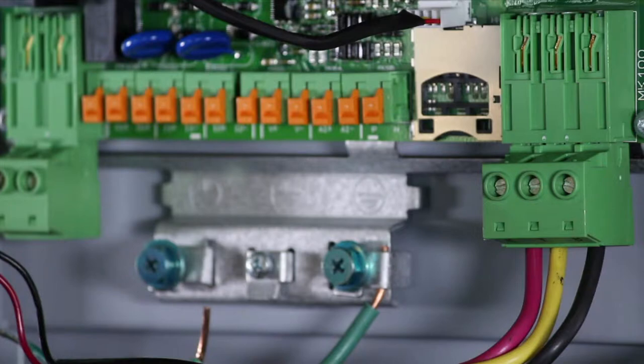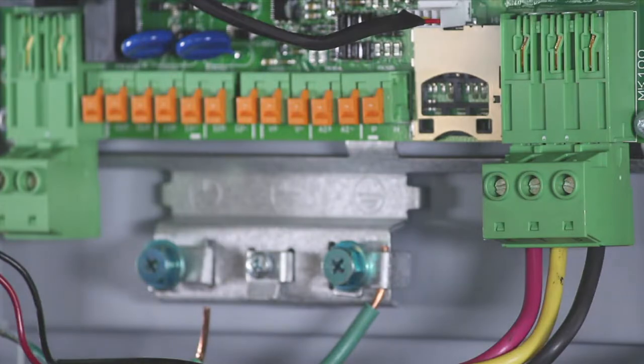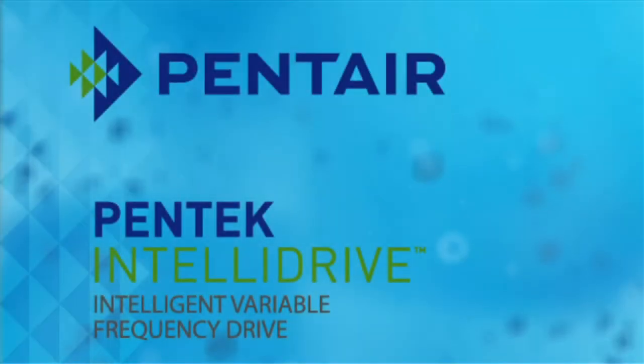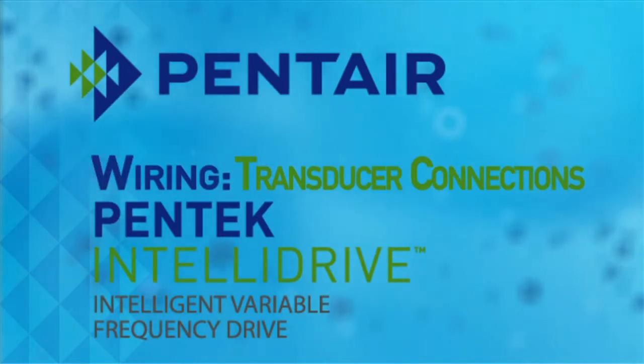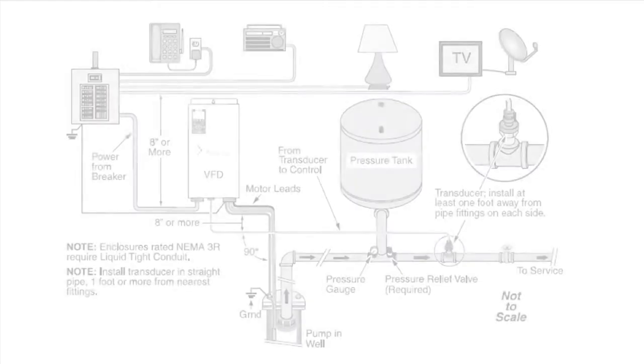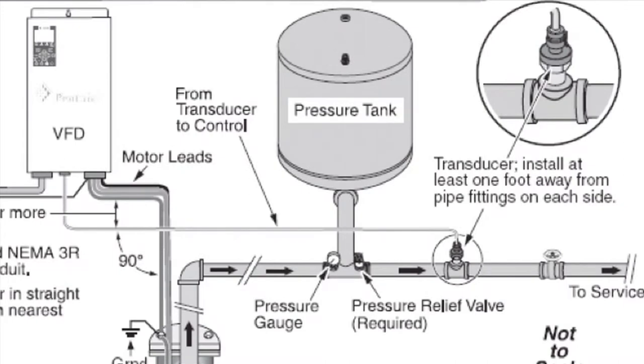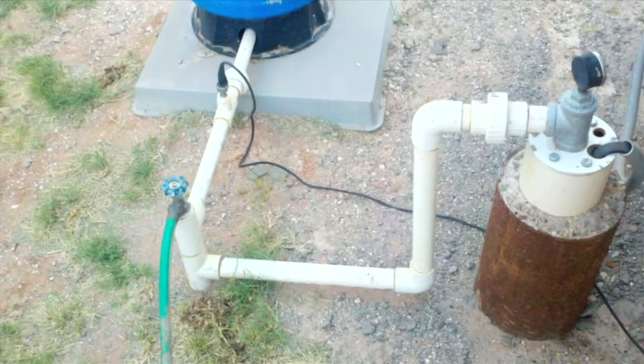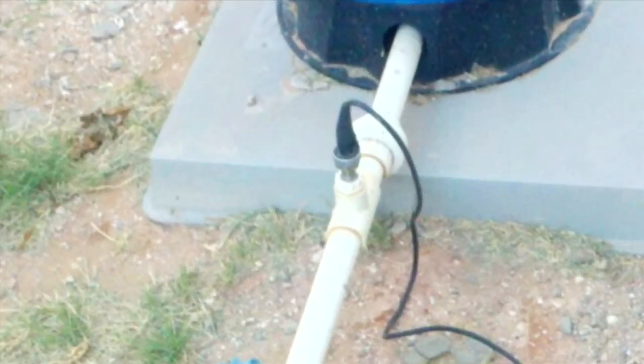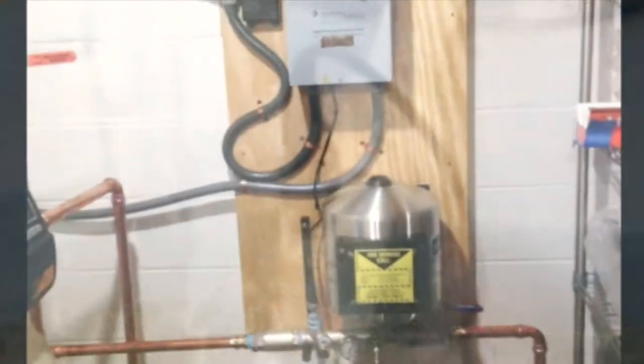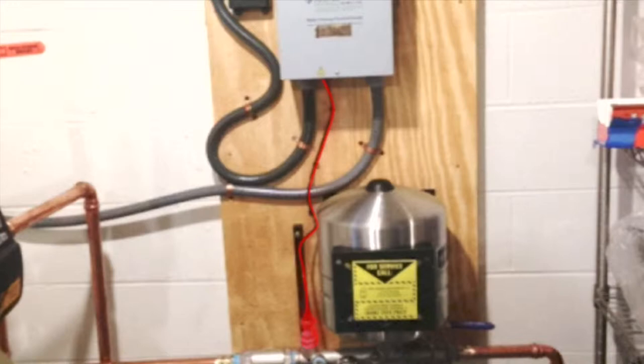Next, we'll connect the transducer cable. Make sure that when installing the transducer that it is installed after the tank and directly in the flow of water on a straight run pipe. You don't want to float the transducer, install before the tank, or before a T, as these situations will not provide the Pentek IntelliDrive with accurate readings, and therefore the unit will not function correctly.